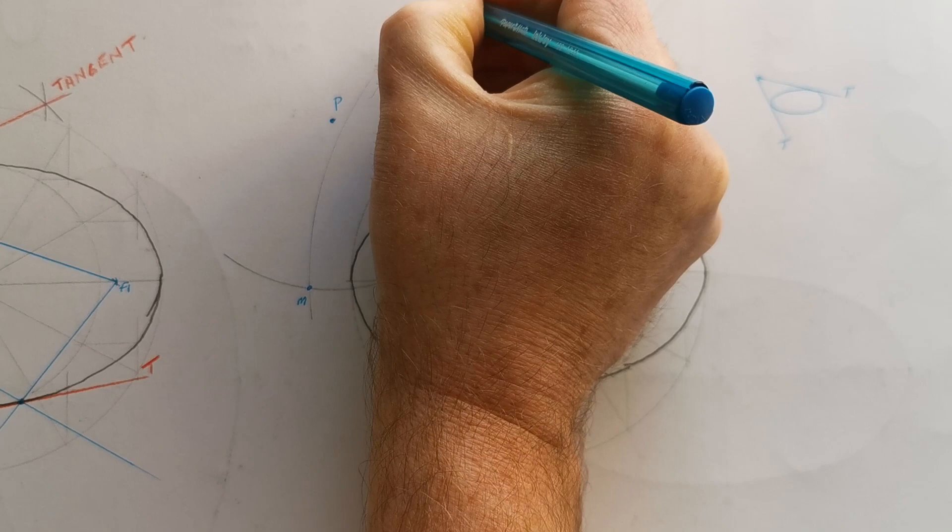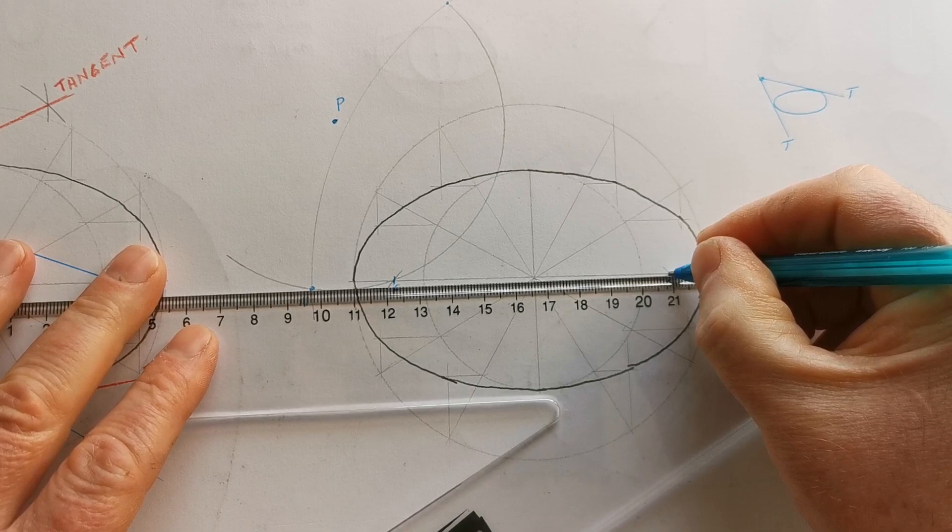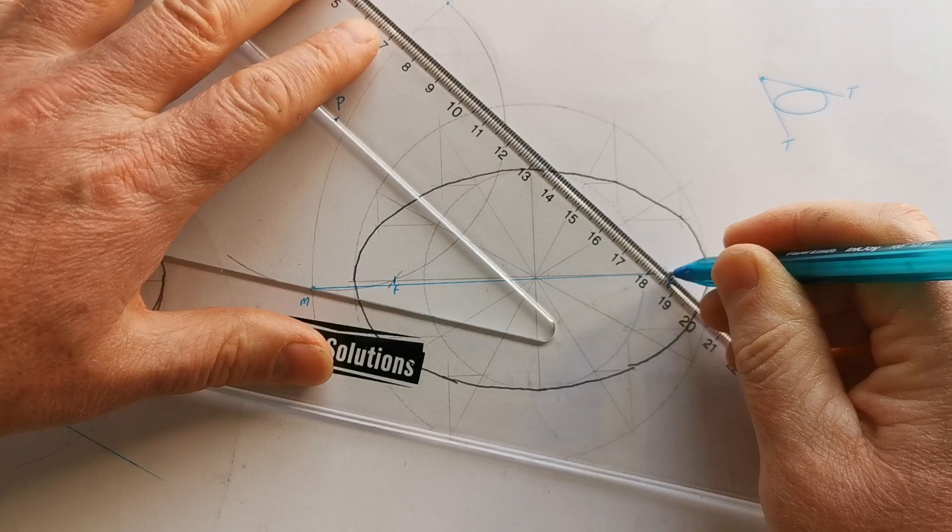Where those two arcs intersect I'm going to call that M and N. And when you join these back now to the far focal point, they will give us the tangency points. So when you join that back to the far away focal point.